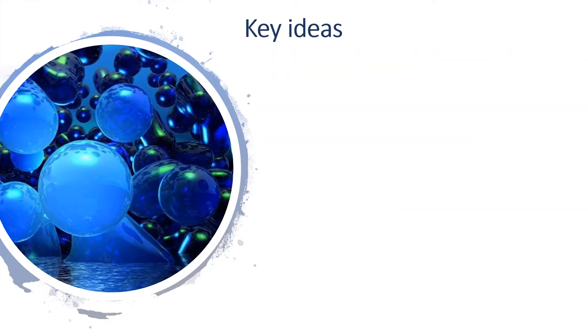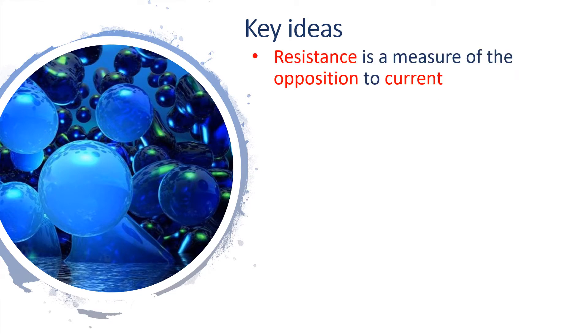So here's the key ideas you may want to write down. Resistance is a measure of the opposition to current. We measure resistance in ohms, which is given a Greek letter omega, because we can't use O because that would look like a zero.